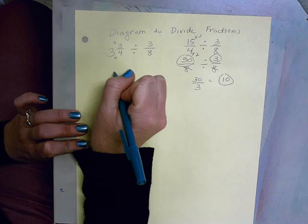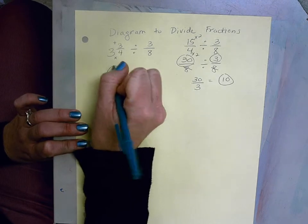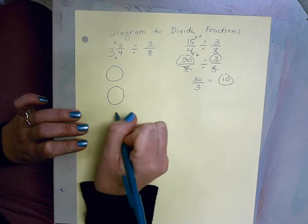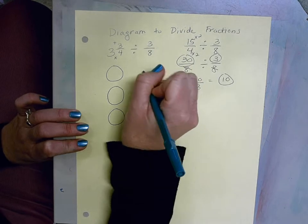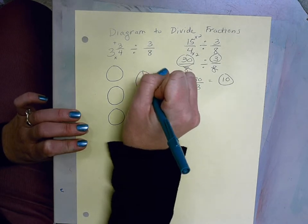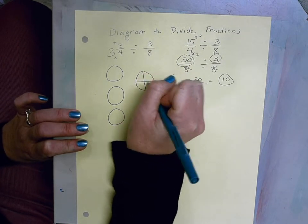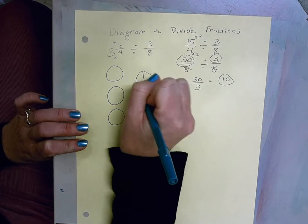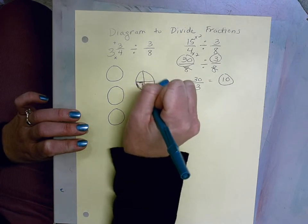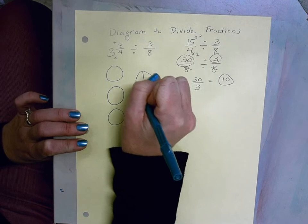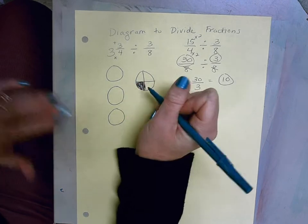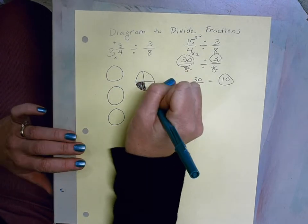And to demonstrate that to you, I'm going to draw a picture. I'm going to draw three wholes and I'm going to draw another one and I'm going to cut it into fourths and I'm going to cross out what I don't need. I don't need 1/4 of it, so I'm going to ignore that section. So here's my 3 and 3/4.